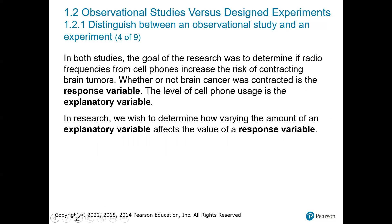These two studies both aimed to determine if radio frequencies from cell phones can increase the risk of getting a brain tumor. Whether or not brain cancer was contracted is called the response variable, and cell phone usage is the explanatory variable. There are many different terms — explanatory, independent, predictor — for the first variable, and response or dependent for what happens as a result.